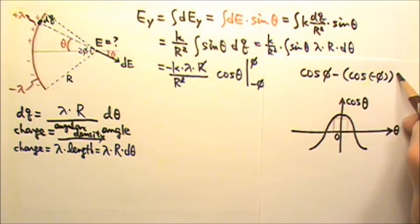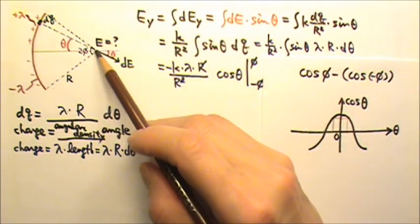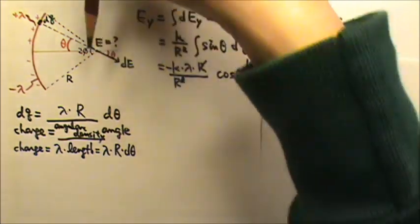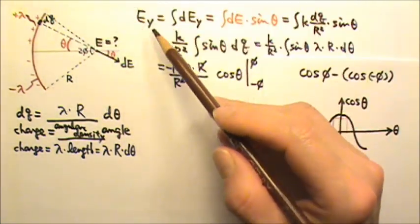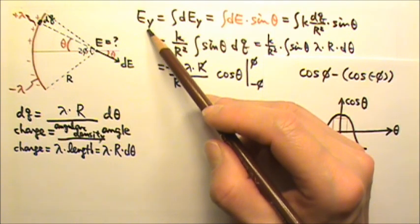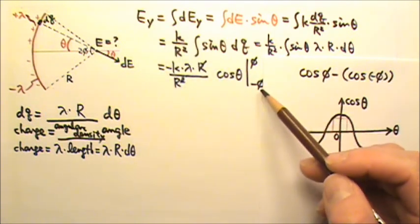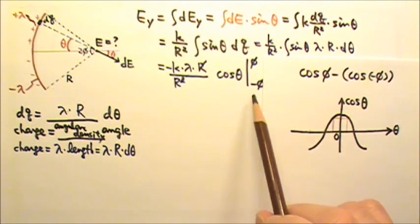Because we already know the electric field over here is in the y direction, so there's no reason why the electric field's y component should be 0. So we should know that this is not right. We need to fix the mistake.